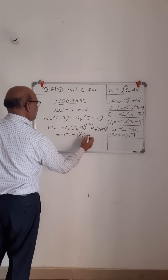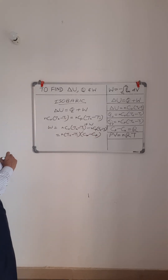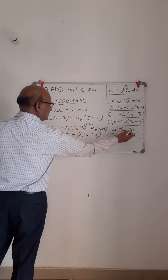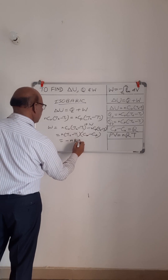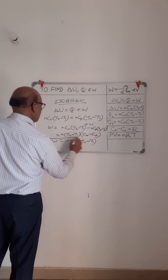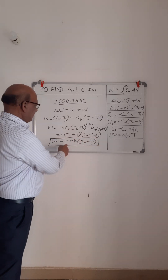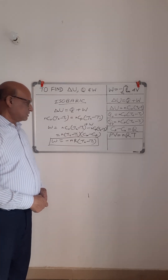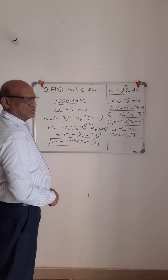This gives work done equals N(T2 minus T1)(Cv minus Cp), which equals minus NR(T2 minus T1). The work done is negative because work is done by the system as the gas expands from volume V1 to volume V2 at constant pressure.